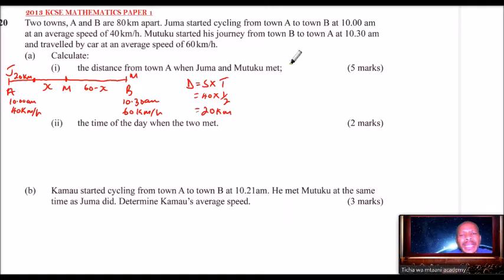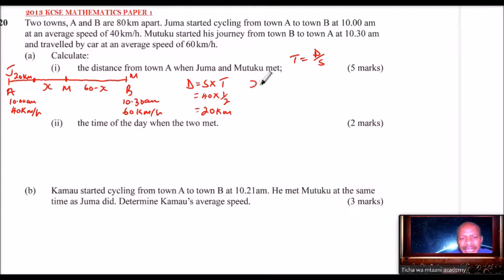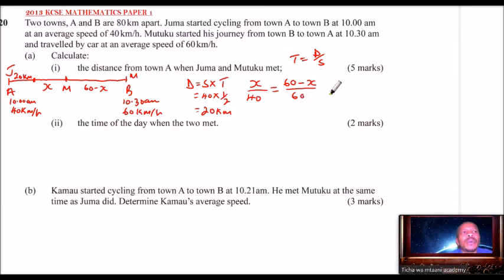Time equals distance over speed. Since the distance covered by Juma from the 20 km mark to where they met is X, you divide by his speed of 40. This equals the distance covered by Mutuku, which is 60 minus X, divided by his speed of 60. Cross multiplying gives 60X = 40(60 minus X), which is 60X = 2400 minus 40X. Taking 40X to the other side gives 100X = 2400, so X = 24.